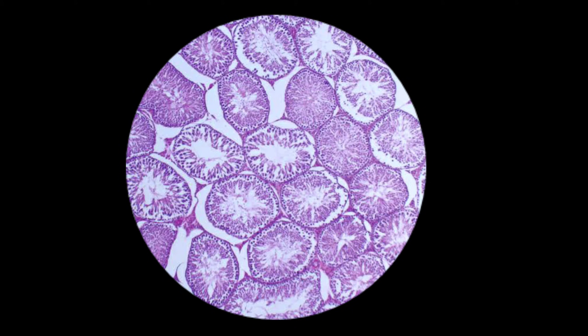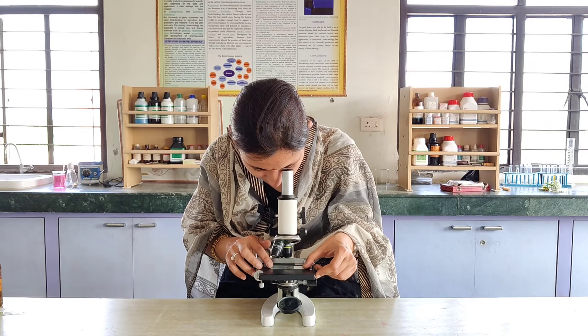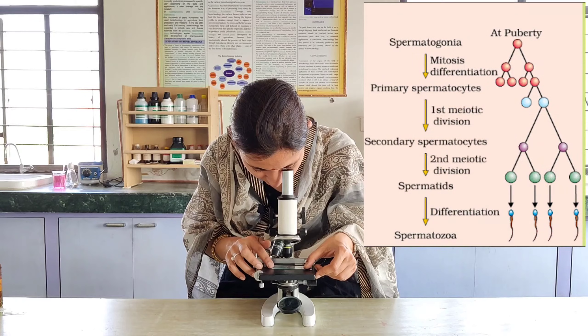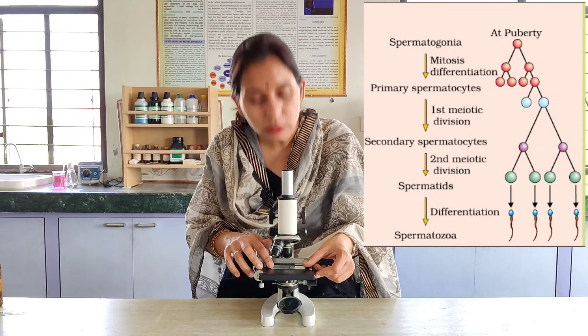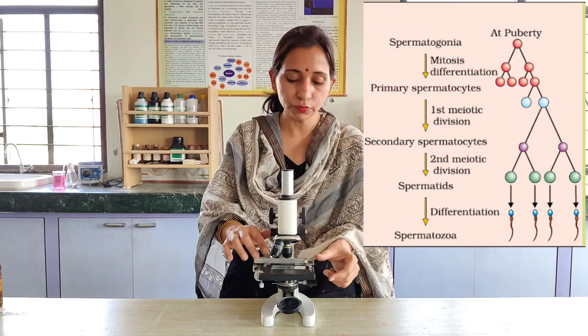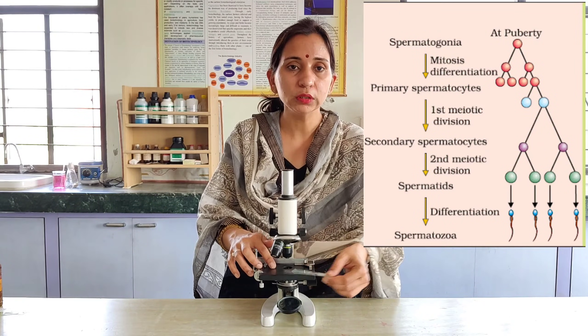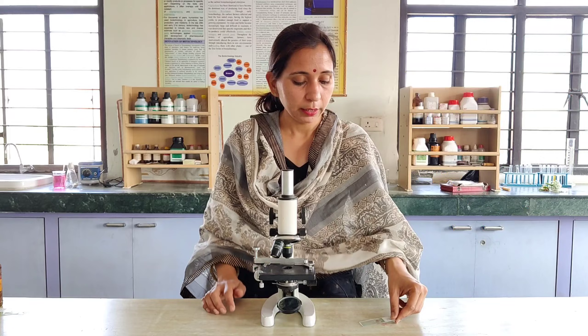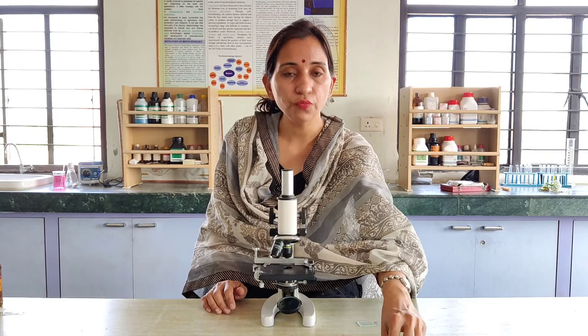These seminiferous tubules are present in the internal structure of the testis, where the process of spermatogenesis will continue. So this is the study of testis. Now we will observe the internal structure of the mammalian ovary, so first of all let's try to adjust it.